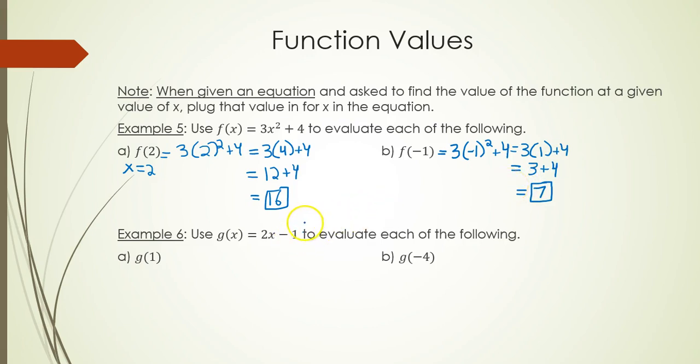Example 6: same process except we have g(x) = 2x - 1. So when you see g(1), it means in the function g, let x equal 1. So g(1) is 2x - 1, that's 2 times 1 minus 1.